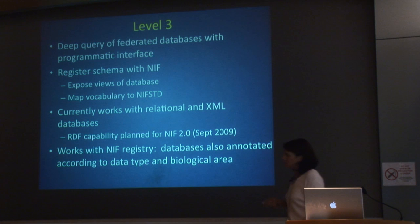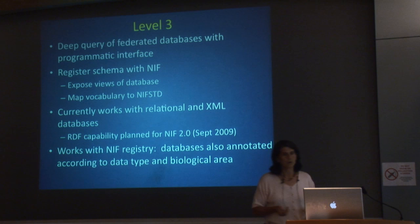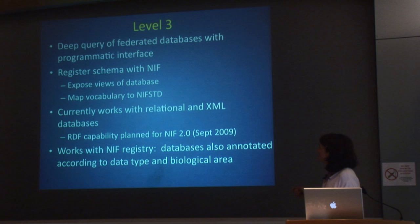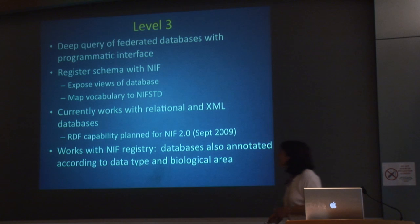Level three resources are databases. They have a programmatic API and a schema. They register their schema with the NIF and generate views that we can actually query. It works very well—we have 24 of these currently online with millions and millions of records, a very rich source of information. They choose the views they wish to expose, so private data isn't made available. Instead of having to issue queries independently to all these databases, you query them all simultaneously.